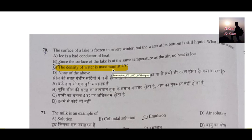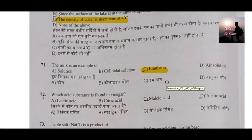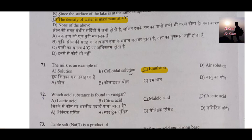Question number 71: Milk is an example of which type of solution? It is an emulsive solution. Emulsion means the particles are homogeneously mixed. A colloid means particles are not homogeneously mixed. Fresh milk is emulsive in nature, but when milk curdles, the fat molecules separate from water, and it becomes more like a colloidal solution — what we call cream, butter, or loni separates out.